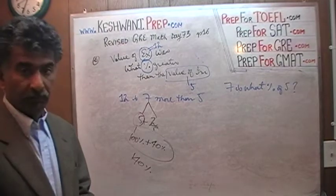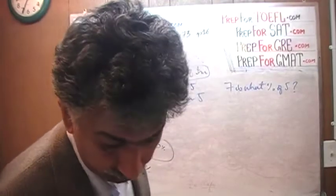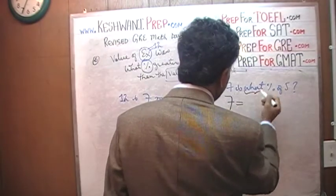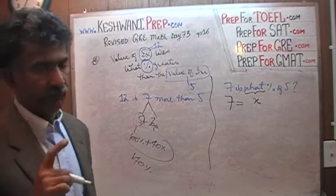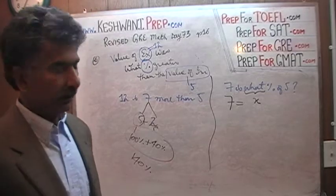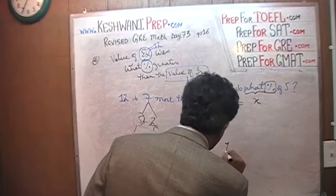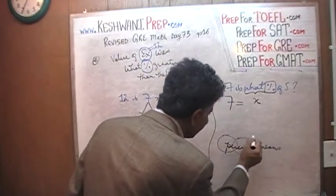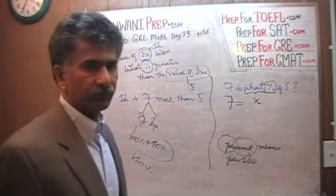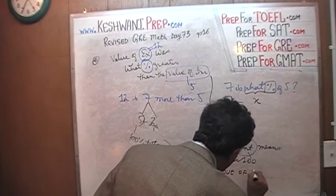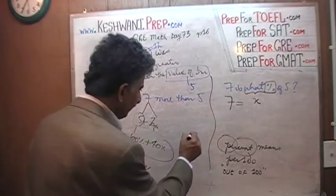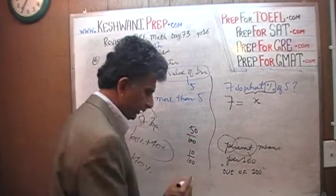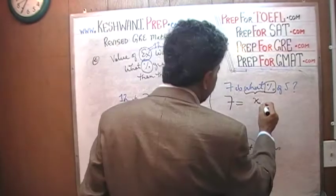If you're set on doing it the proper way, let's do it. We set up: 7 equals x percent of 5. Percent means per 100 — that's where the word 'cent' in 'century' comes from. So 5% is 5 over 100, 10% is 10 over 100, 50% is 50 over 100 (or half). Therefore, x percent is x over 100.